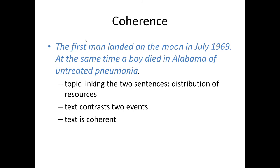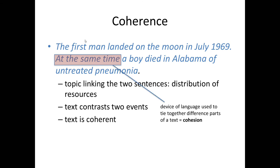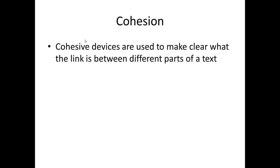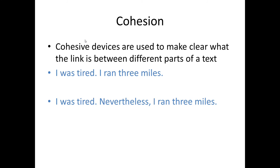Notice also that the device this text uses to establish the connection between the two events is the prepositional phrase 'at the same time'. Using some bit of language to tie together the different parts of a text in this way is called cohesion. Cohesive devices are used to make clear what the link is between different parts of a text. If we look at the sentences 'I was tired, I ran three miles', it may not be clear how the two are meant to relate to each other. However, if we add a cohesive device such as 'however' or 'nevertheless', the connection becomes clear: 'I was tired, nevertheless I ran three miles.'